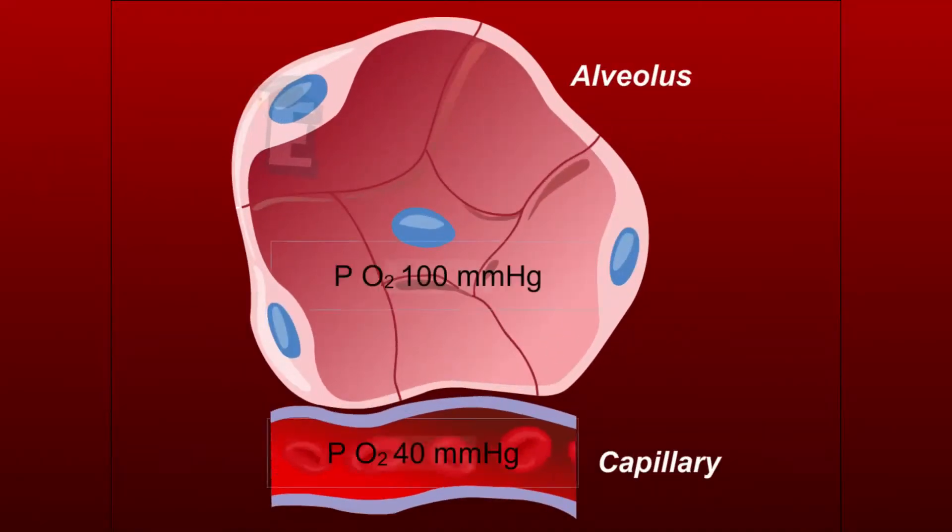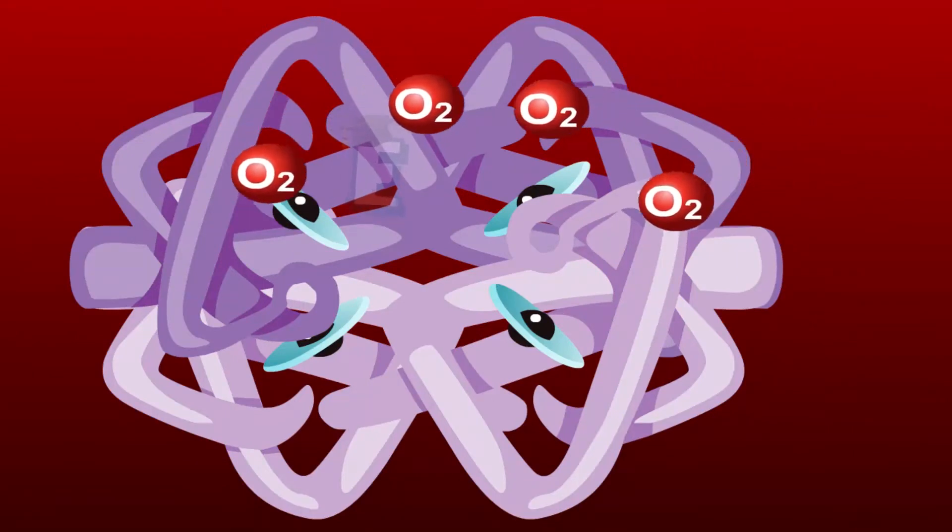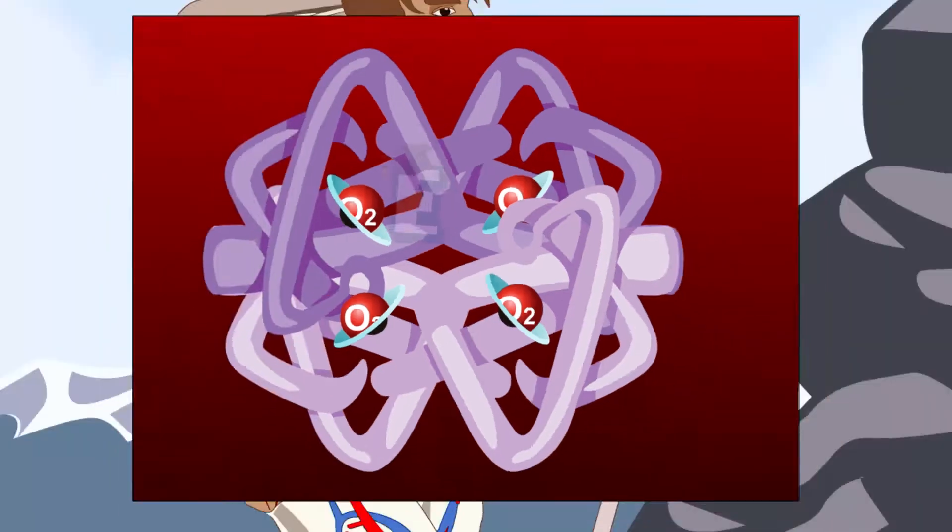Then the hemoglobin in the red blood cell will bind the oxygen. One molecule of hemoglobin can bind four molecules of oxygen. The bond of hemoglobin with oxygen is called oxyhemoglobin.